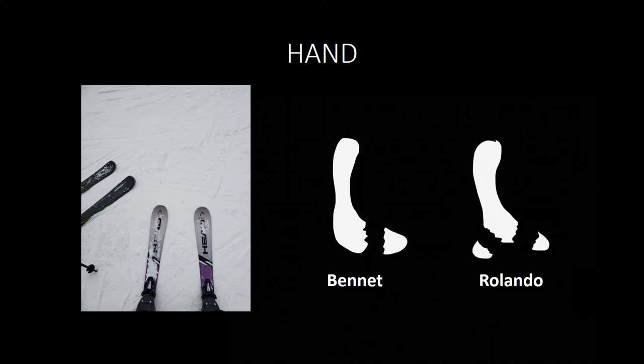Boutonniere deformity occurs when the extensor tendon's central slip ruptures, leaving the PIP joint in flexion and the DIP in hyperextension. It occurs with lacerations, jammed fingers, or arthritis; treatment is splinting, and if untreated may require surgery. Mallet finger is rupture of the extensor tendon or an avulsion fracture at the base of the distal phalanx, caused by forced flexion of the DIP — often from a direct blow to the fingertip. Treatment is splinting the distal tip in extension.